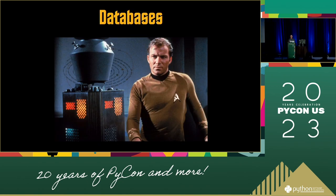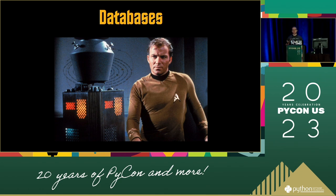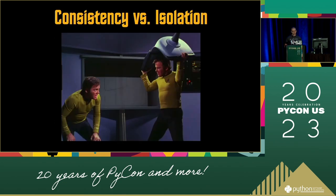When you use a database, you need to choose an isolation level, like serializable or read uncommitted. And if you use a distributed database, like MongoDB, then you need a consistency level, like eventually consistent or linearizable. There are dozens of algorithms. And to make things worse, consistency and isolation are easy to confuse with each other.